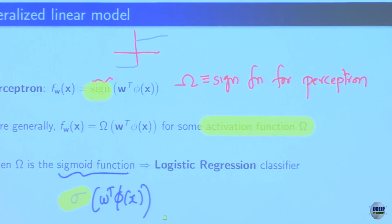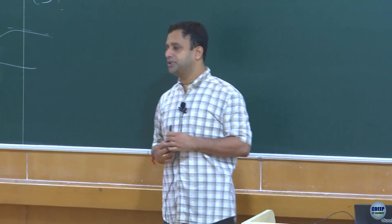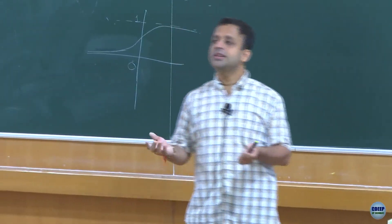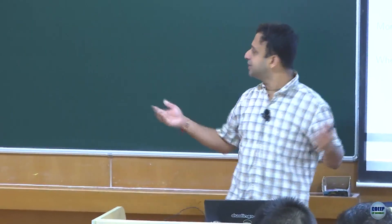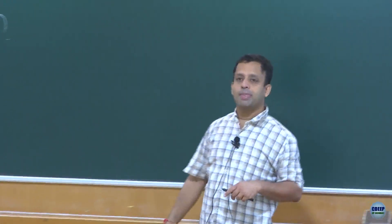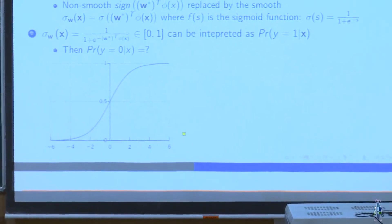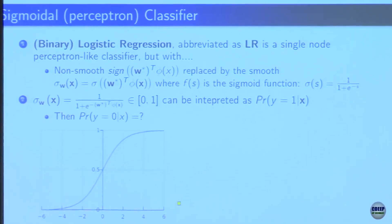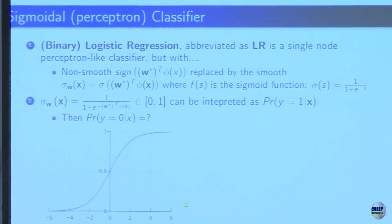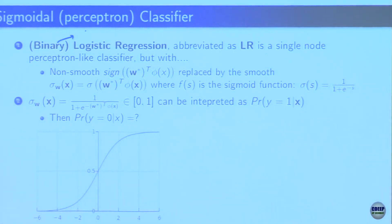Let us now continue the story with the sigmoidal perceptron classifier. We will see several similarities with perceptron in terms of update rules. Let us look at simple binary logistic regression — the two-class case — where the classes are 0 or 1. The non-smooth sign is replaced by the smooth sigma, where sigma(s) is the sigmoid function. The key difference is that labels are 0 and 1 instead of minus 1 and plus 1.